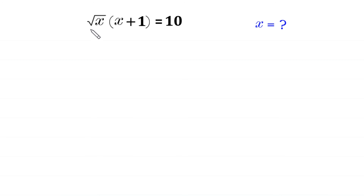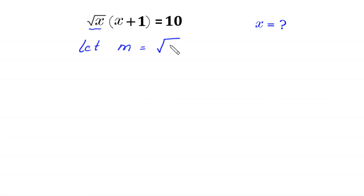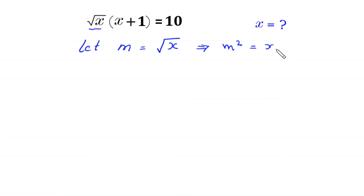First of all, we suppose that this square root of x is equal to m. Let m be equal to square root of x. And if we take the square of both sides, this implies that m squared is equal to x.